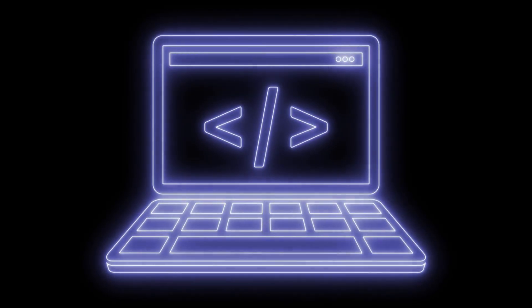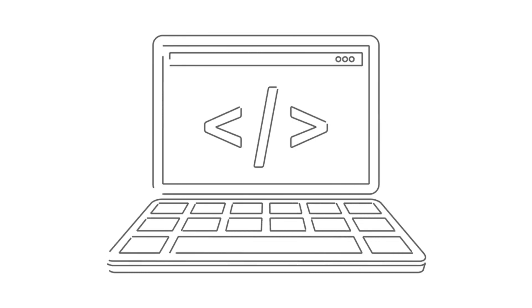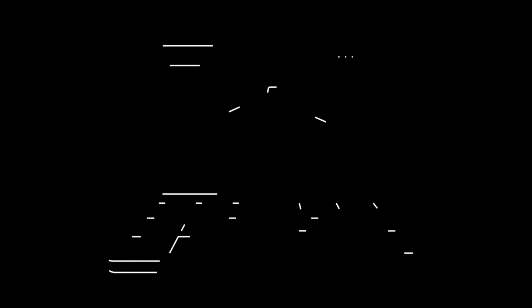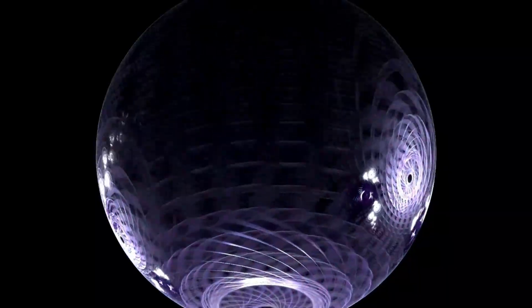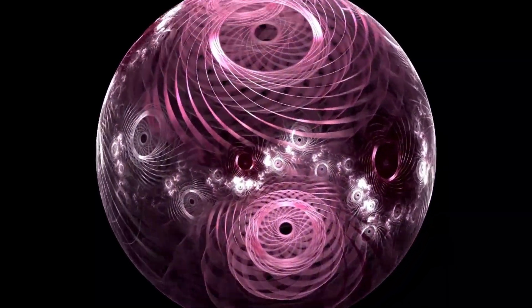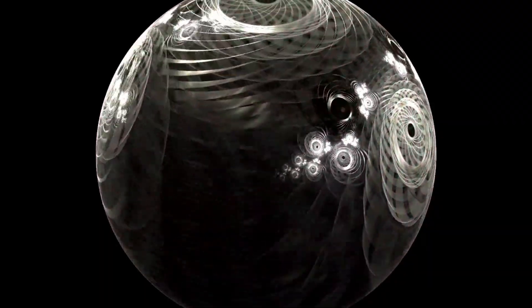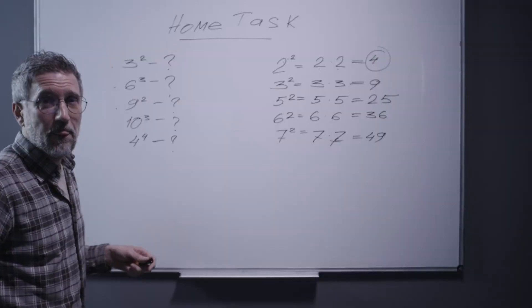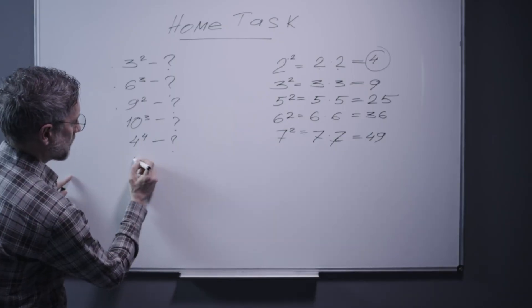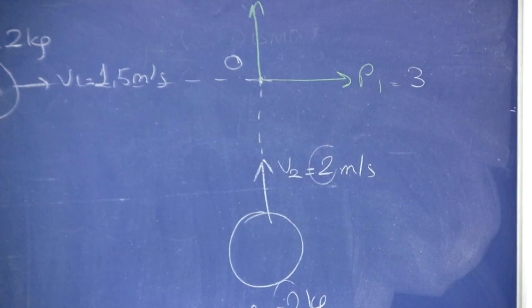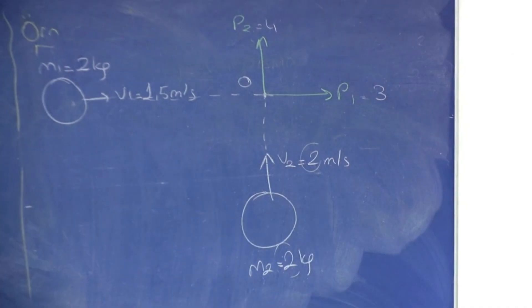One possibility is that the physics of gas accretion is simply different in the early universe. Maybe the intense densities and temperatures made it easier for matter to overcome the radiation pressure that normally limits growth. Or perhaps magnetic fields, turbulence, or exotic forms of dark matter helped funnel gas into black holes far more efficiently than in the modern universe. Each of these ideas is being explored right now by theorists trying to keep up with Webb's flood of new data.